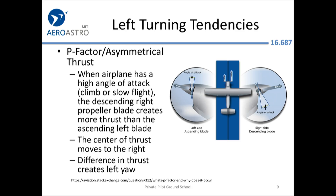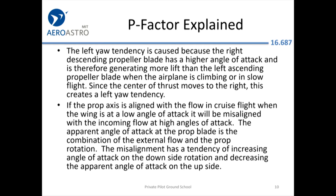On P-factor, this is the slide we discussed previously. Professor Hansman and I added more material with different ways to understand it. The intuitive explanation is that when the airplane is pitched up — such as during a climb — the descending blade is going into the wind and generating more thrust, while the ascending blade on the left is going away from the wind and generating less thrust. Here's a more detailed description of why the center of thrust shifts to the right.